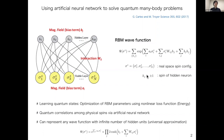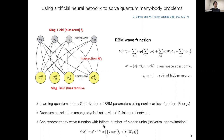With this, the problem of representing quantum states can be recast as the optimization of RBM parameters using a nonlinear loss function — in this case, the energy. The good point of the RBM wave function is that it can represent any wave function with an infinite number of hidden units, if we take A, W, and B to be complex variables.